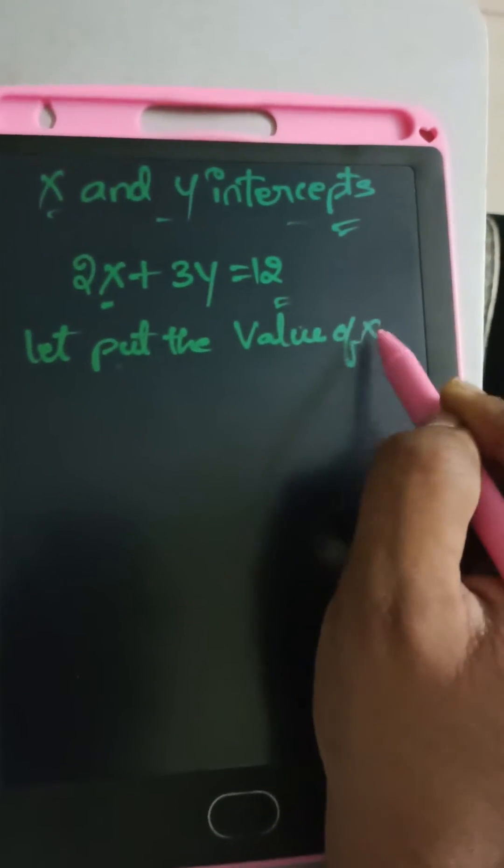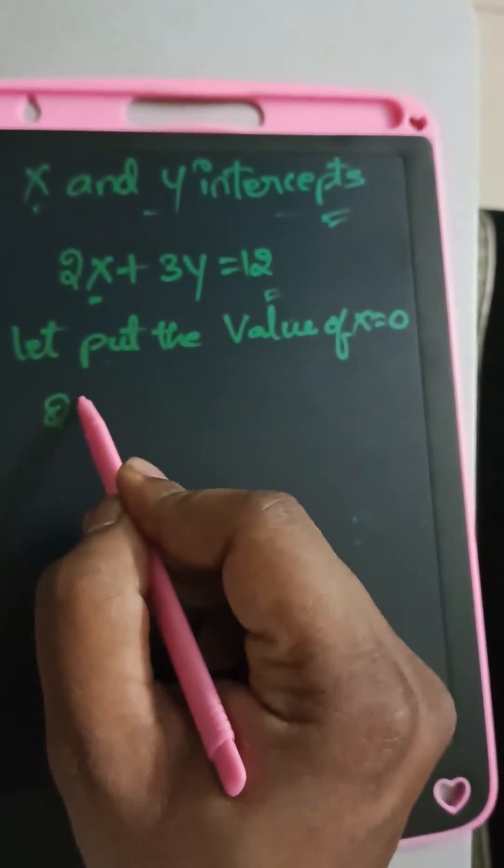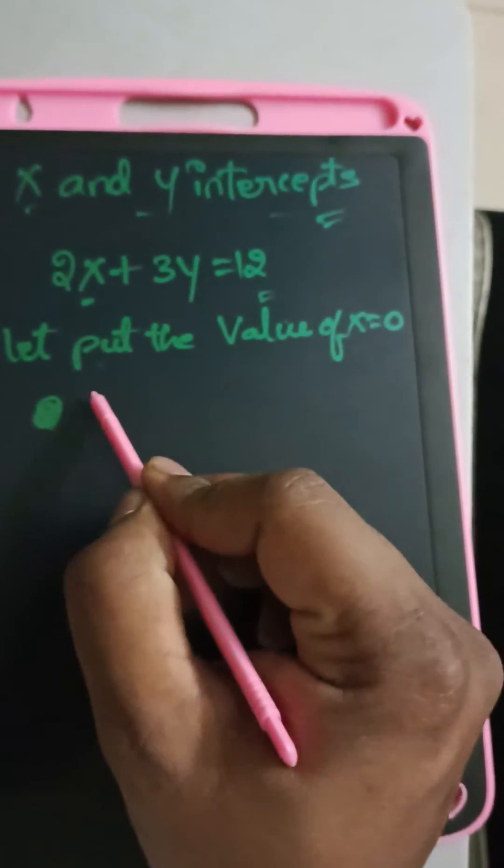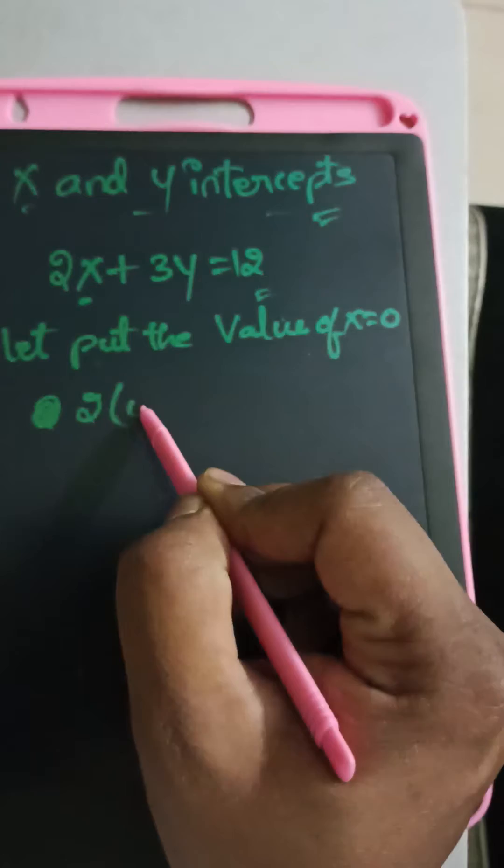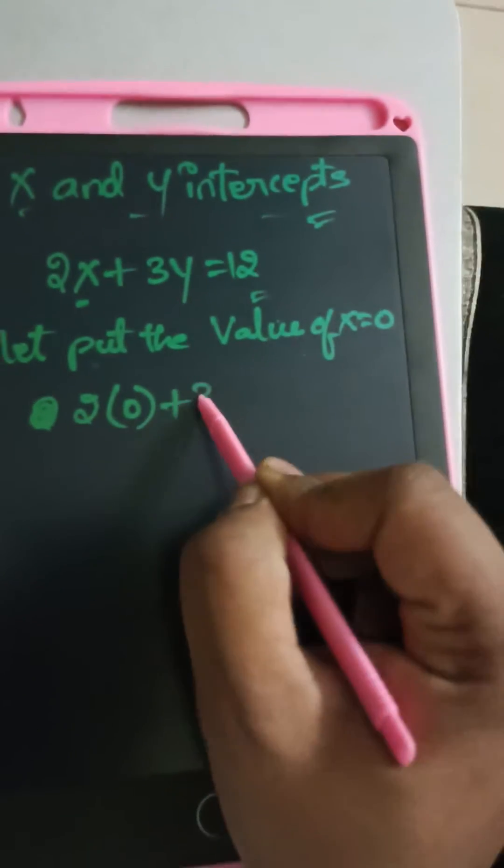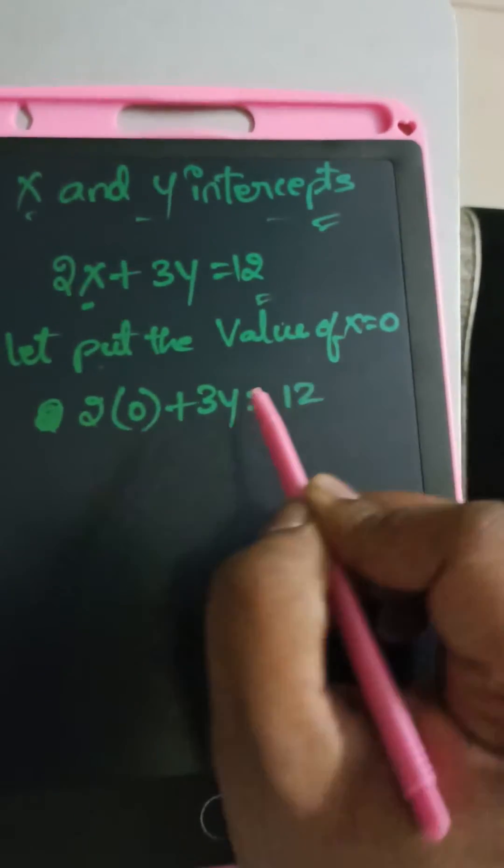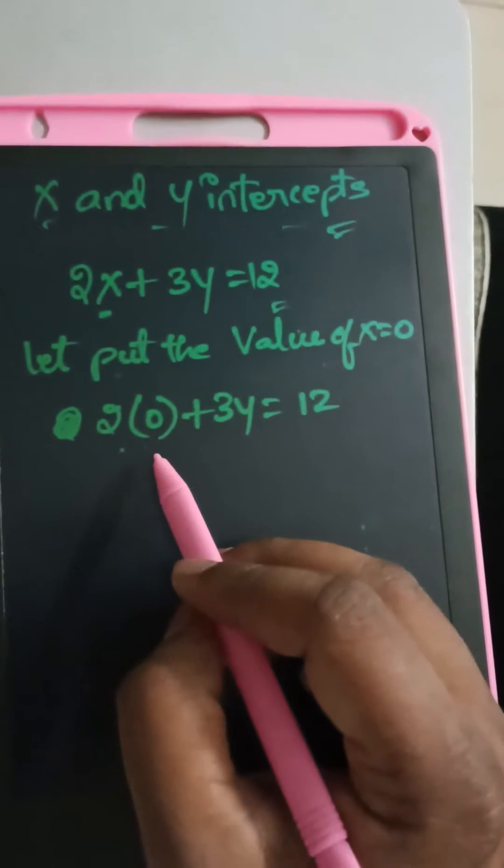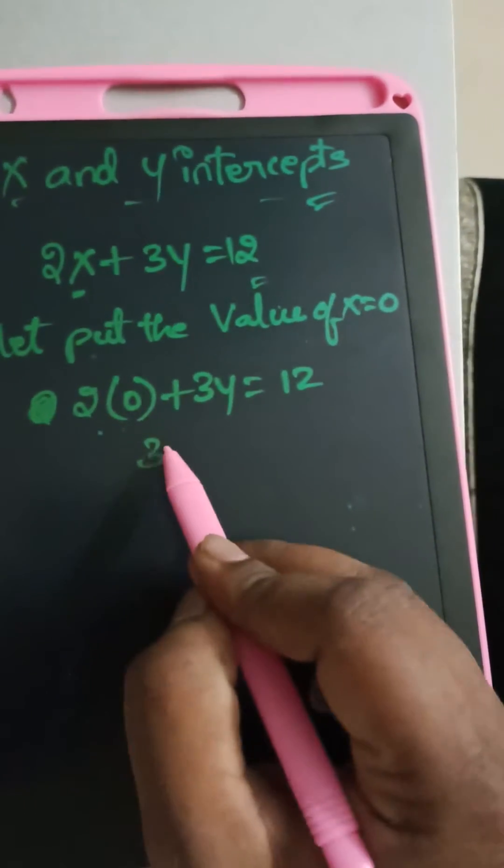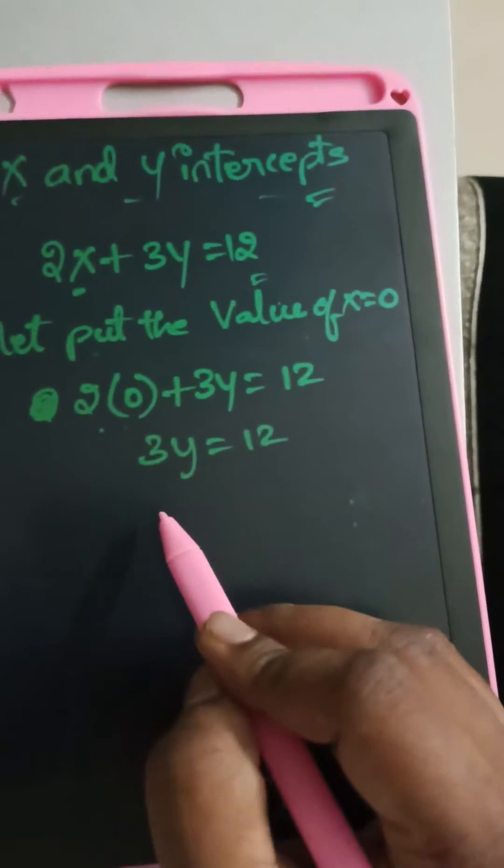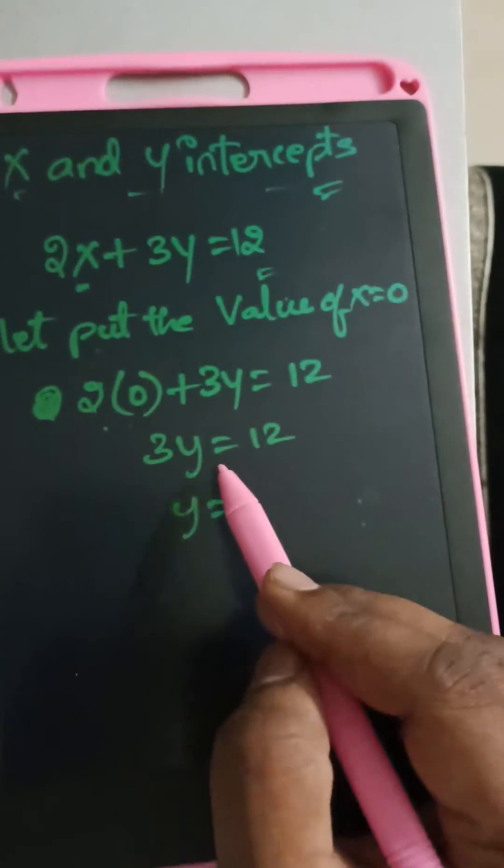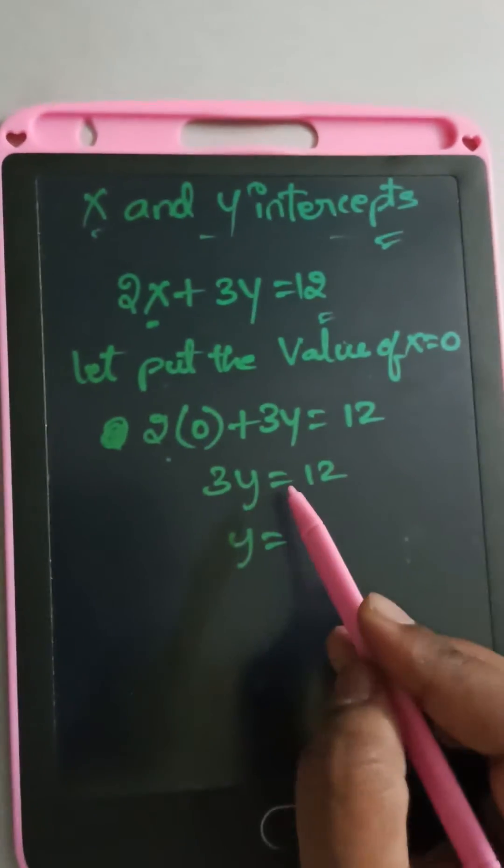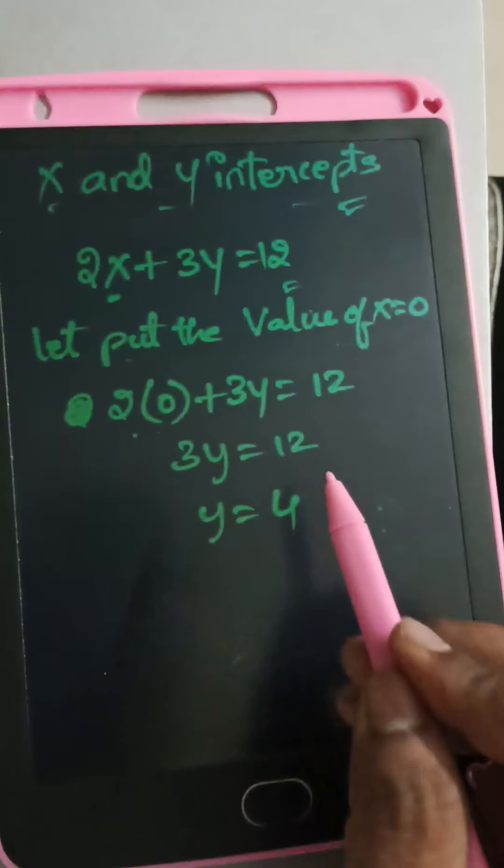2 times 0 plus 3y equals 12. 2 times 0 is 0, so 3y equals 12. Y equals 4 (we divide 12 by 3). Therefore, the y-intercept value is (0, 4).